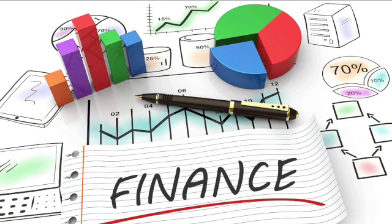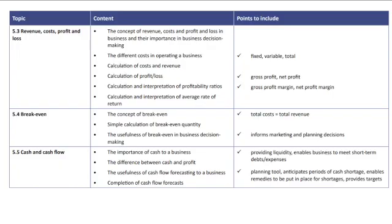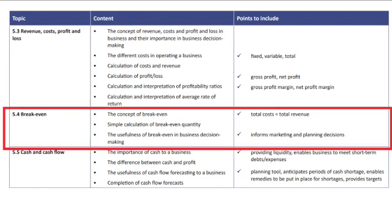This video is for OCR GCSE Business Studies Unit 5. It's the second video I've made based on the financial calculations. The first video was on revenue, cost, profit and loss. This video is going to be on breakeven, and the second part will be on cash and cash flow. This is just a summary of the formulas and calculations — I'm not going through the entire specification for Unit 5 looking at the theory, just the calculations.